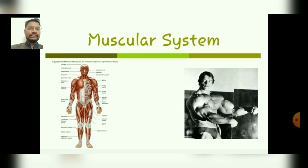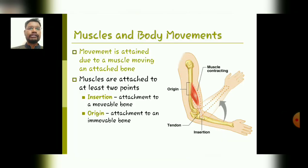We are continuing our topic that is the muscular system. Coming to the next topic: what are the different types of muscles and their body movements. Movement is attained due to a muscle moving an attached bone. Muscles are attached to at least two points: the insertion site, which is the attachment to a movable bone, and the origin site, which is the attachment to an immovable bone. The origin is where the muscle originates and the insertion is where the muscle gets inserted.